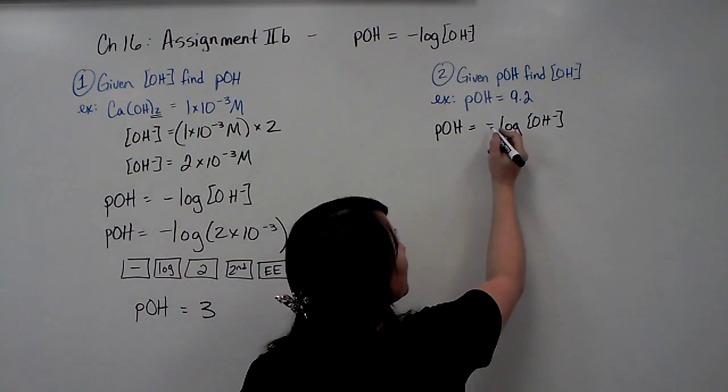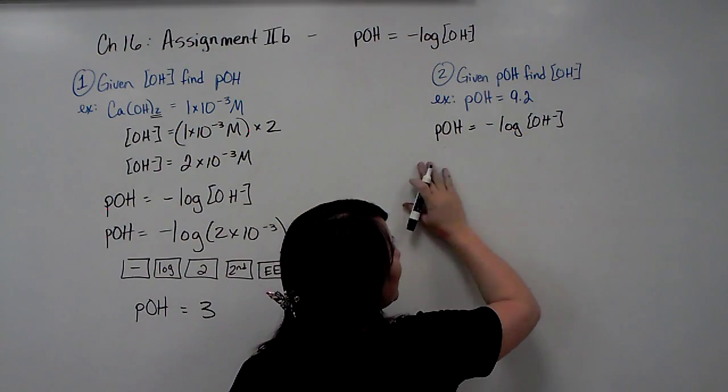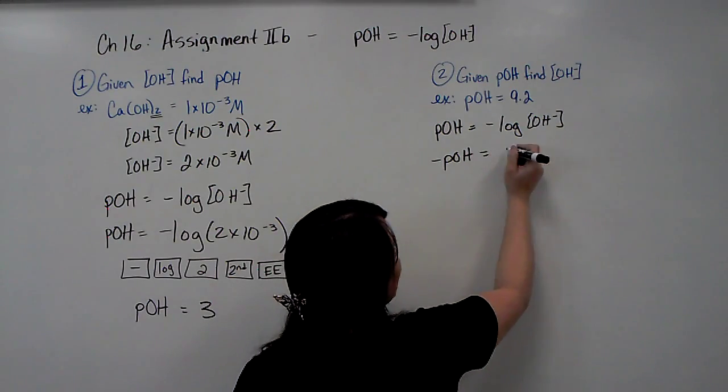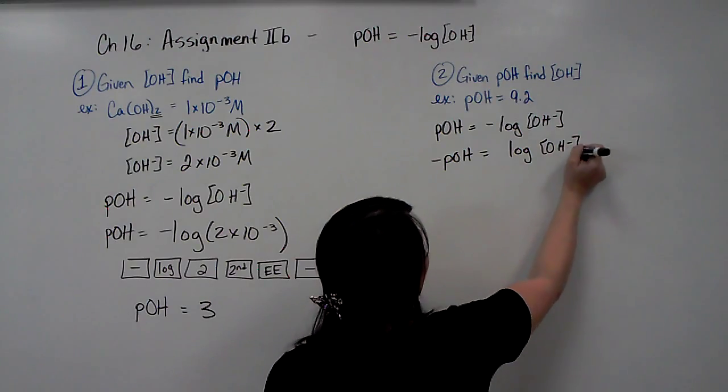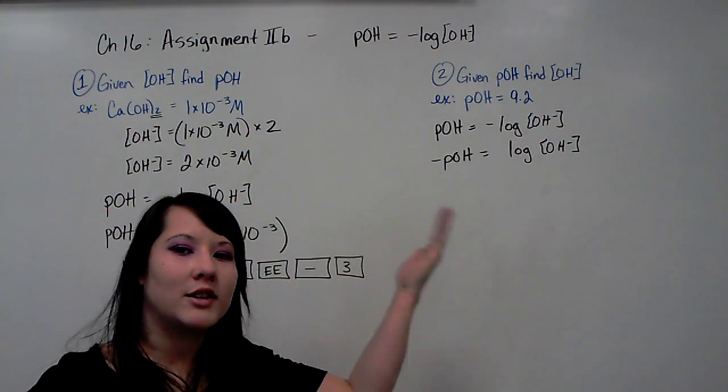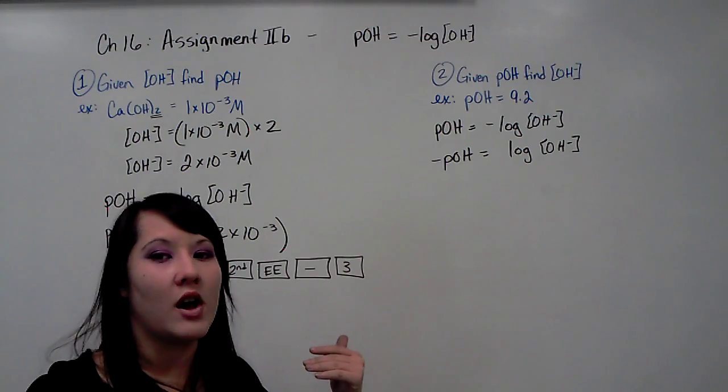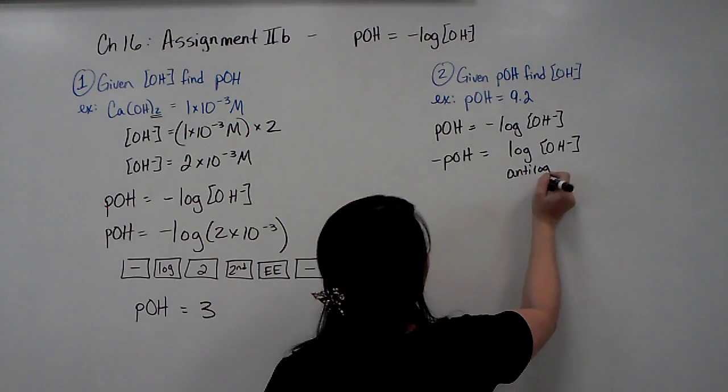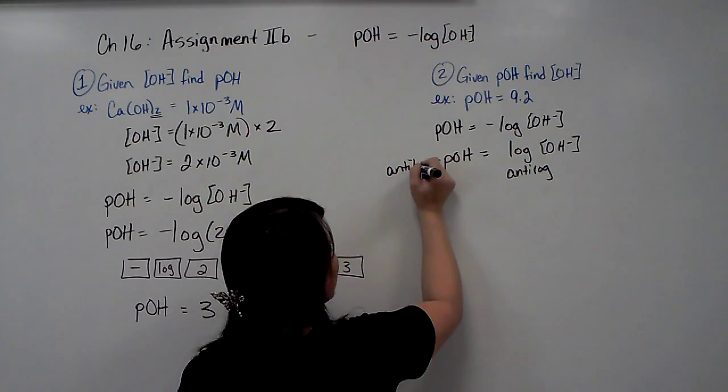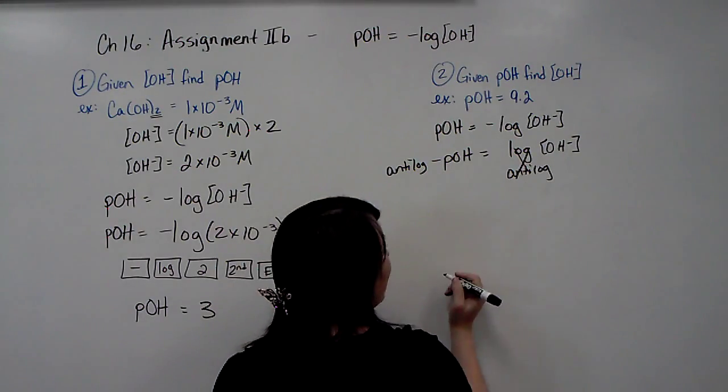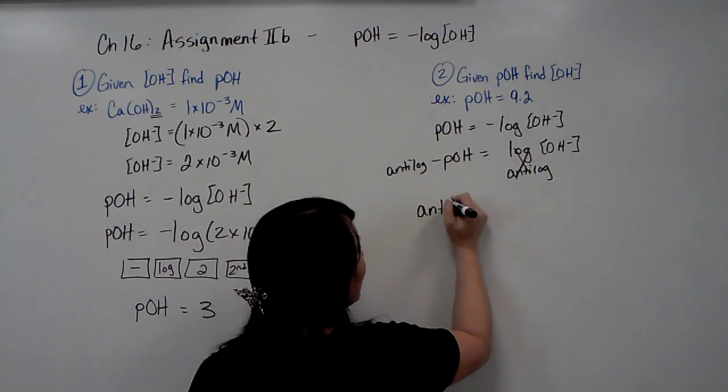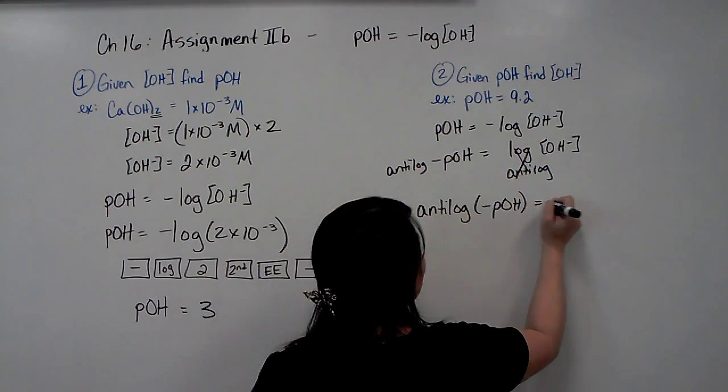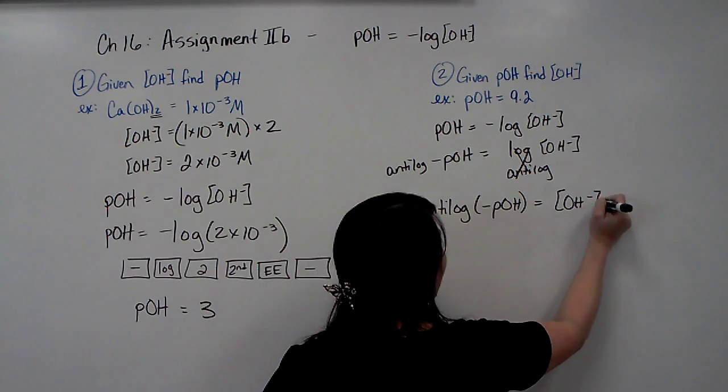But we want to rearrange this equation so that it is set to solve for the hydroxide concentration. So to do that, we're going to move our negative to the other side by multiplying everything by negative 1. So that's going to give us negative POH equals log of hydroxide. And then we need to move the log to the other side, and the opposite of log is anti-log. So we'll multiply both sides by anti-log, which cancels log on the right side. So we end up with the anti-log of the negative POH is going to give you the hydroxide ion concentration.